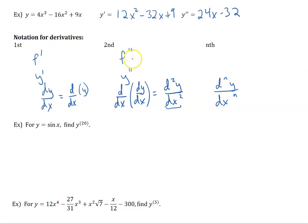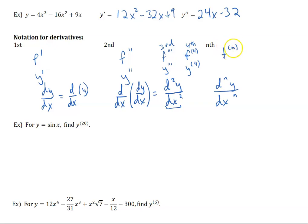Now for the prime notation, for the third derivative we can use a prime notation one more time, so third derivative would be f triple prime or y triple prime. But for the fourth or any higher derivatives, we would use parentheses — so we say f with parentheses around the fourth — it's a difference between raising something to the fourth power and taking the fourth derivative. Without parentheses that means f raised to the fourth power, but with parentheses that means the fourth derivative. And for the nth derivative, we would say f raised to the nth in parentheses, read as nth derivative of f.